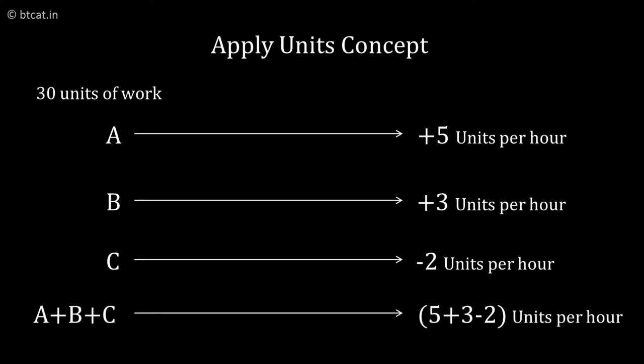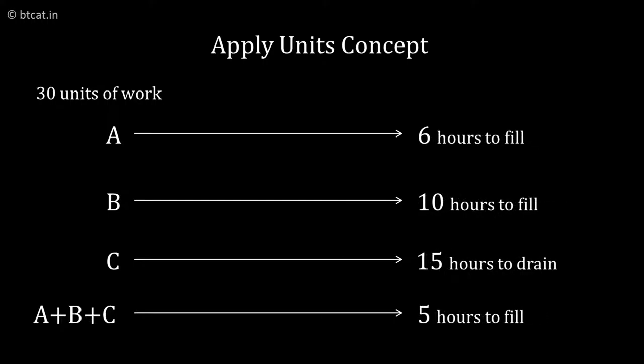In other words, the net is plus 5 plus 3 minus 2, which gives us 6 units per hour. We have to reach 30 units, therefore the answer is exactly 5 hours. In 5 hours, the tank will be full. This is the concept of pipes.